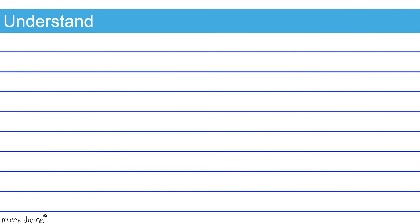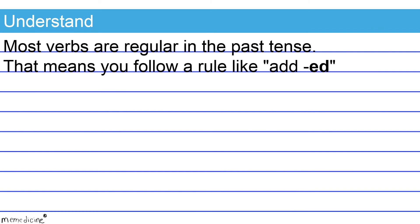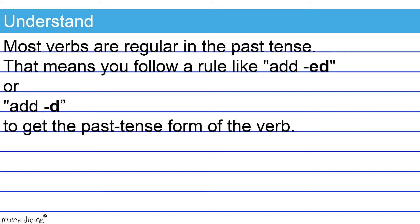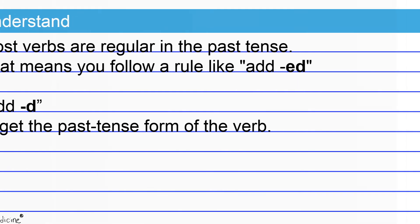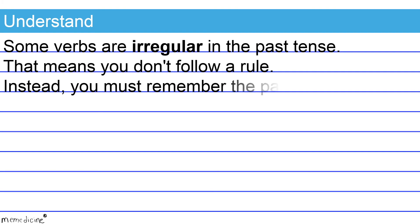Here's what I need you to understand. Most verbs are regular in the past tense — that means you follow a rule like adding -ed or -d to get the past tense form of the verb. Some verbs are irregular in the past tense, which means you don't follow a rule. Instead, you must remember the past tense form of the verb.